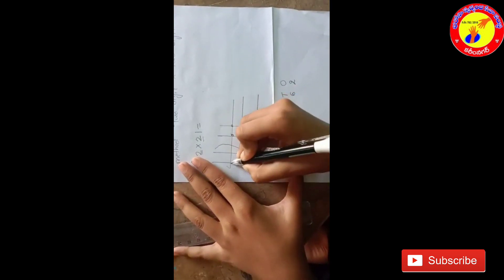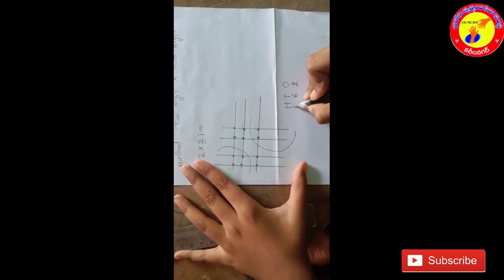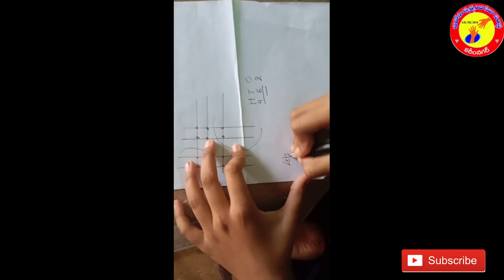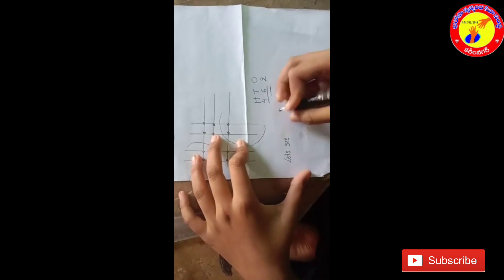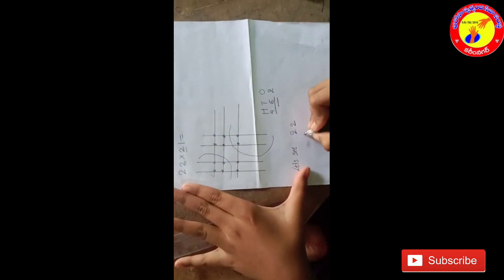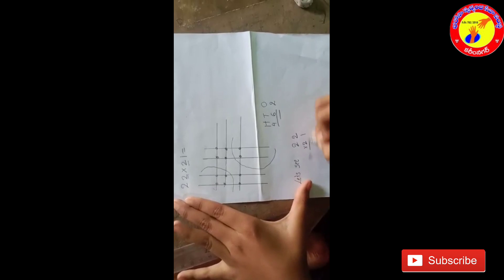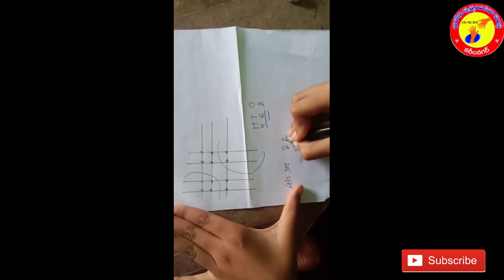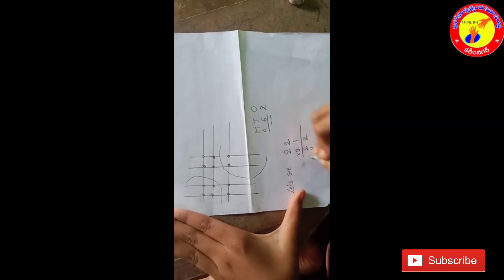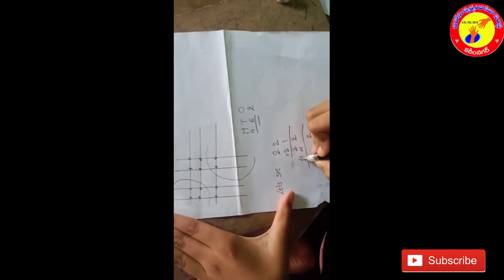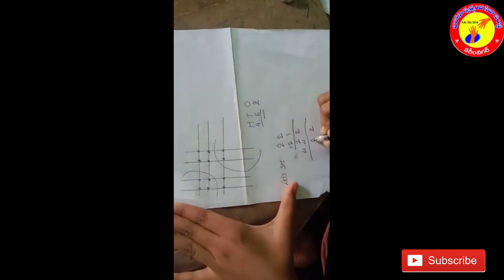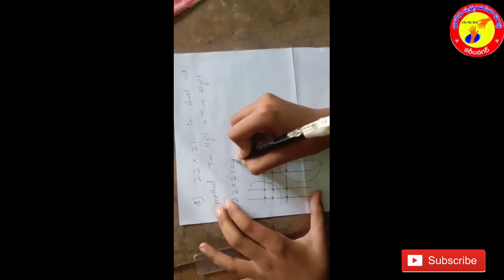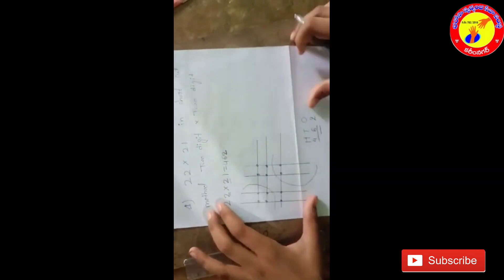Now count hundreds: 1, 2, 3, 4. In 100 place it's 4. Let's see the answer. 22 into 21: 2 times 1 is 2, 2 times 2 is 4, 2 times 2 is 4. Next, 2, 4, 5, 6. The answer is correct, it is 462.